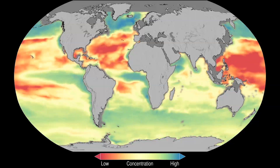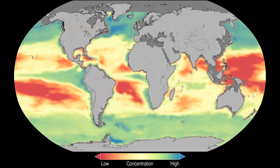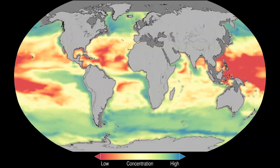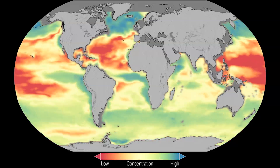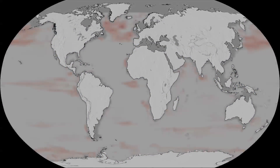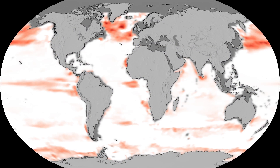This data visualization shows changes from 1998 to 2012. According to the study, significant decreases in population, shown here in red, are mainly in the northern hemisphere.